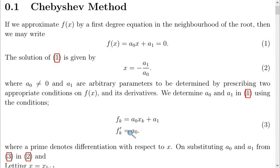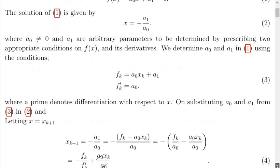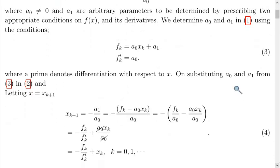Differentiating it, you have this, where a prime is the differentiation with respect to s. It is possible now for you to substitute a naught and a1 from equation three into equation two.